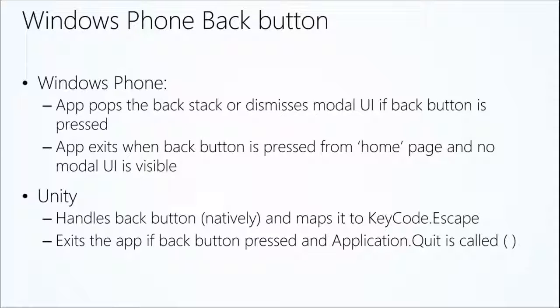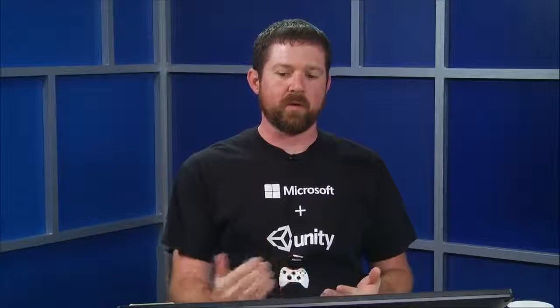Another note on Windows Phone: it is a requirement on that platform to have a back button. It used to be a hardware requirement — now it's just a requirement. Some of the newer phones, like the HTC One and some new Nokia phones, actually have soft buttons for back. Typical behavior is the app pops in the back stack. If you hit the back button while navigating, it goes backwards; if there's a modal dialogue, it dismisses that. Unity handles all of this for us out of the box — I'll show you some code on the next slide for how to handle it in your Unity script.